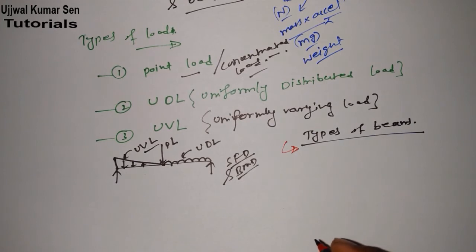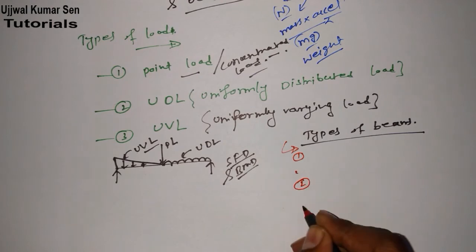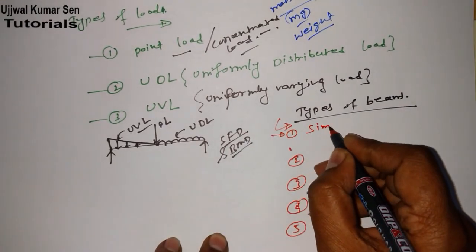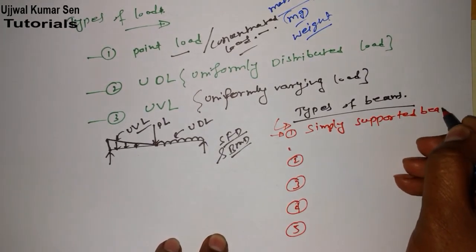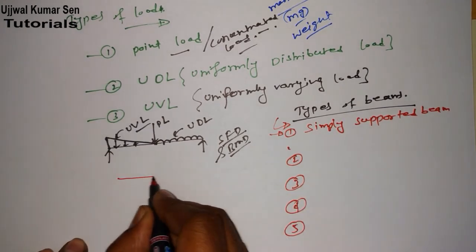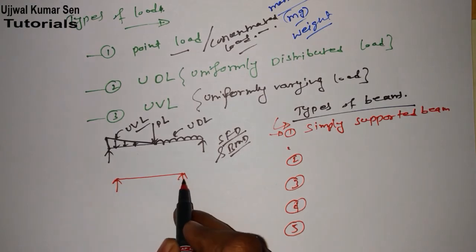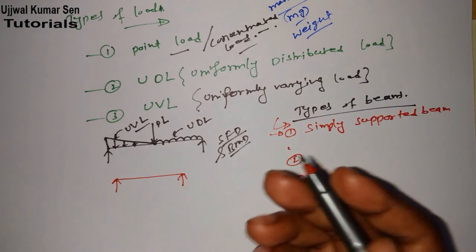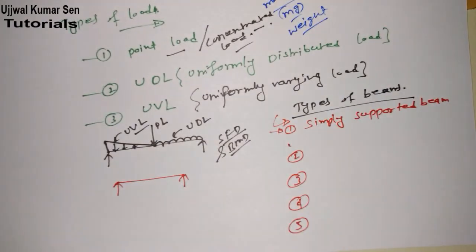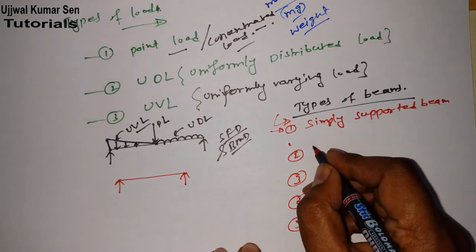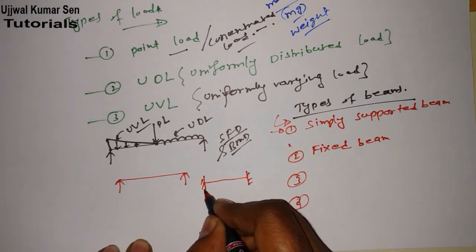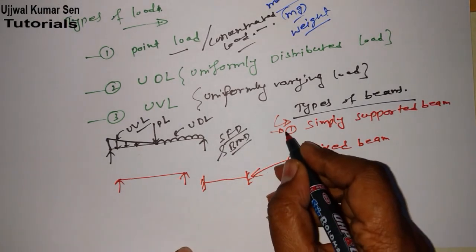There are five types of beams. The first type is simply supported beam. If any beam is supported at its two ends and these supports are not fixed — suppose this is a beam and I'm supporting it at the two ends — that is known as a simply supported beam. The second is fixed beam. If there is a beam and both ends of the beam are fixed, it is known as a fixed beam.